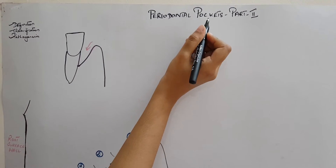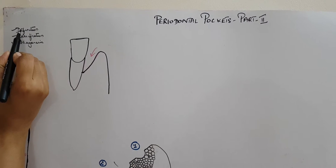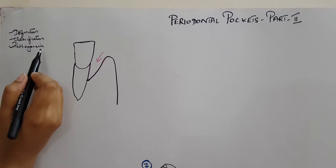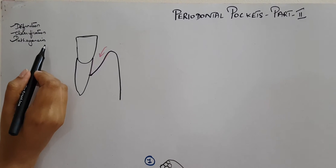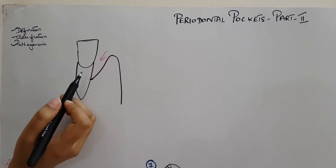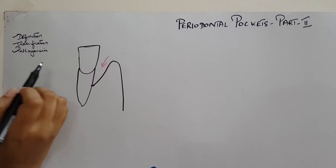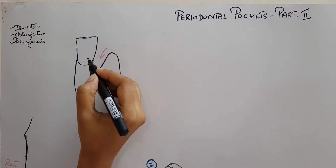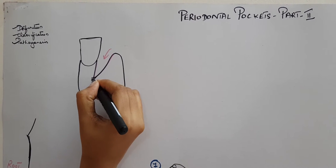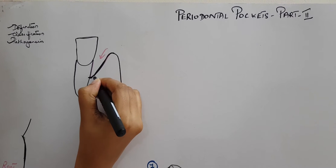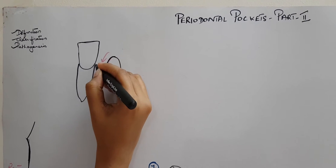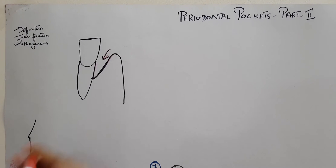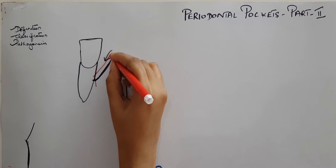Today our topic will be on periodontal pockets part 2. In part 1, we discussed the definition, classification, and pathogenesis of periodontal pocket formation. If you have not watched part 1, it's better that you watch it first and get back to part 2 to understand better. Please subscribe to our channel — the link to part 1 is attached in the description below. In this video, we'll be discussing what changes can happen in the gingival wall and root surface wall once a pocket has formed, and what the contents of the pocket are.